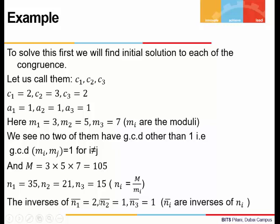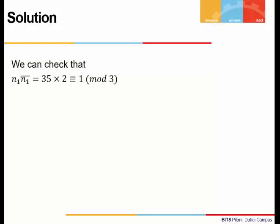Now, we will find the inverse of each of these nᵢ: n₁, n₂, and n₃. And we can see n₁ bar, n₂ bar, and n₃ bar, which we call as inverses, are found to be 2, 1, 1.